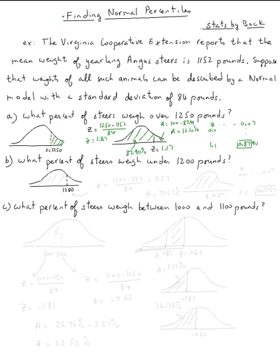Now question B is easier, we don't have to deduct from 100%. Why? Because they ask us what percent of steers weigh under 1200 pounds, so they already asked us about this area.